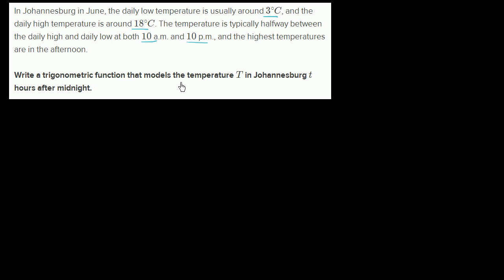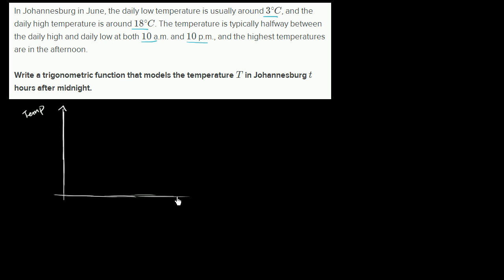We'll write a trigonometric function that models the temperature capital T in Johannesburg, lowercase t hours after midnight. Let's see if we can start to think about what a graph might look like. So this is our temperature axis in Celsius degrees, and this right over here is my time in hours, lowercase t. Let's think about the range of temperatures.